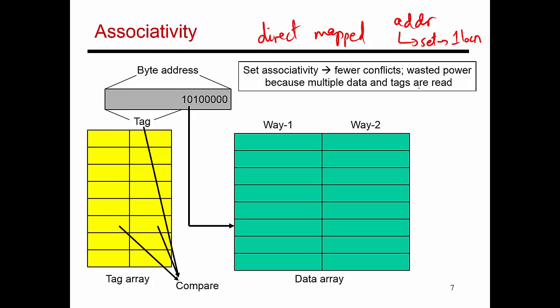In a set associative cache, a given address again maps to a unique set, but in that set, I have multiple locations that I've provided. So, that block of data can be placed in one of many possible locations. In this example, I have a two-way set associative cache. So, I have way 1 and way 2.